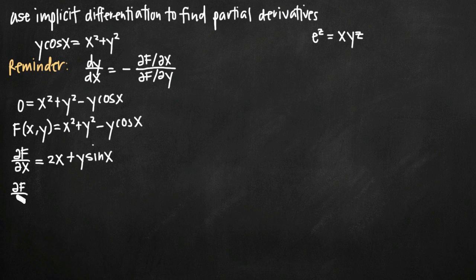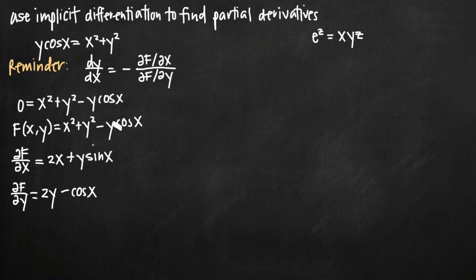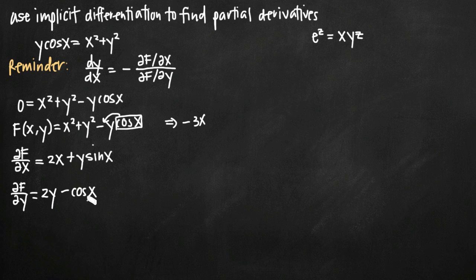Now for the partial derivative of F with respect to y, we treat y as the variable and x as the constant. The derivative of x squared is zero, and the derivative of y squared is 2y. For the term minus y cosine of x, since x is a constant, cosine of x acts as a constant coefficient on y — similar to something like negative 3x — so we're just left with minus cosine of x.